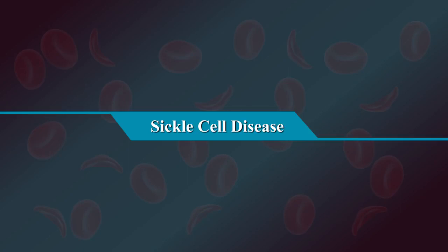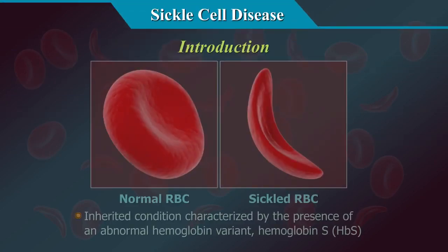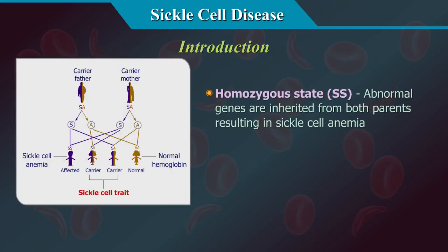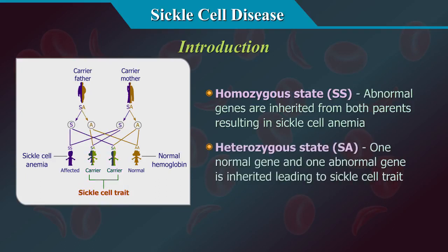Sickle cell disease is an inherited condition characterized by the presence of an abnormal haemoglobin variant, haemoglobin S, called HBS. When HBS exists in a homozygous state, it results in sickle cell anaemia, and in a heterozygous state, it results in sickle cell trait.